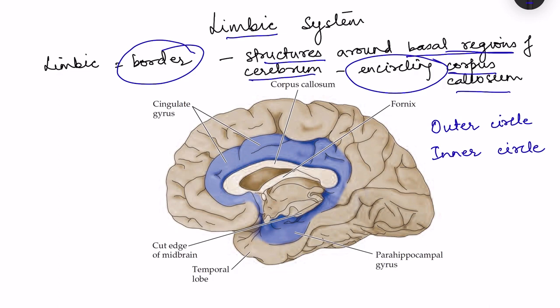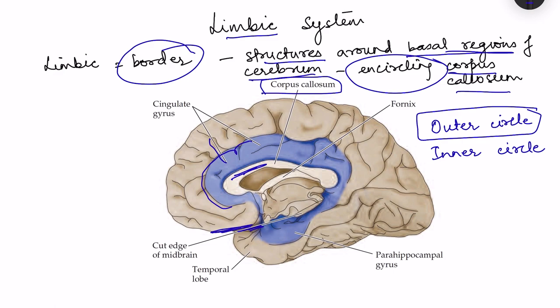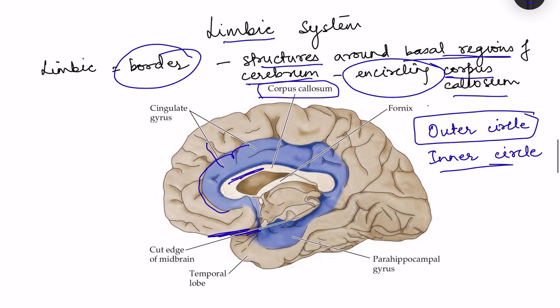These structures are located in the basal regions of the cerebrum. In this cross-section from the mid region of the cerebrum, you can see the corpus callosum with structures outside it. The blue structure forms the outer circle — the limbic cortex — and then there are structures forming the inner circle, which are the subcortical structures.